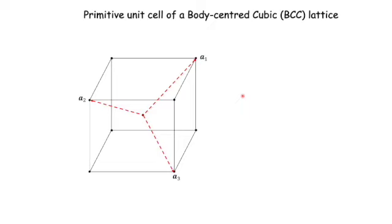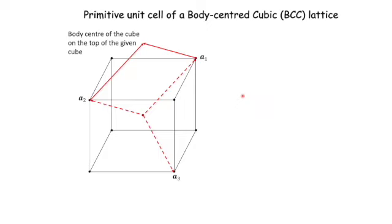Let me show you this by completing the unit cell. You have to pay particular attention as we have to use three points outside this unit cell. Adding vectors A1 and A2 brings you to a point which is the body center of a unit cell sitting on top of the given cube. Although the full cube on top is not drawn, you can imagine there is a cube on the top face, and this point is the center of that cube.